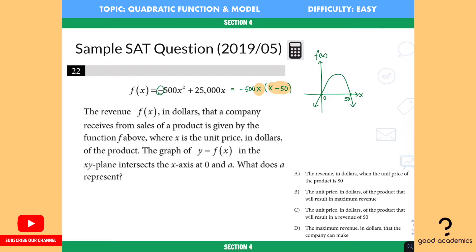It says that's the revenue f of x. May as well just go ahead and write the word right here, revenue, in dollars that a company receives from sales of a product. It's given by the function f above where x is the unit price. So x is the unit price in dollars of the product. The graph of y equals f of x in the xy plane intersects the x-axis at 0 and a. What does a represent?